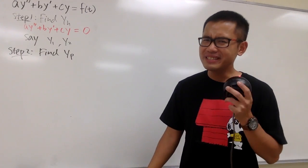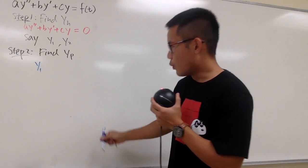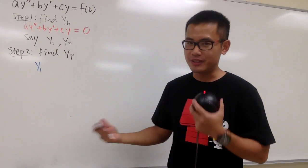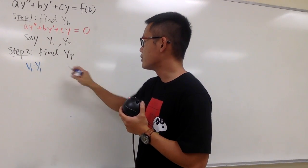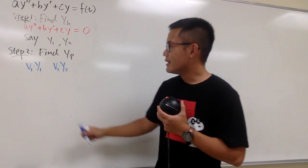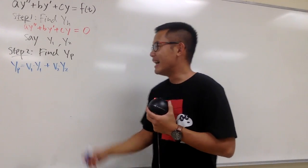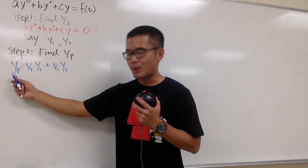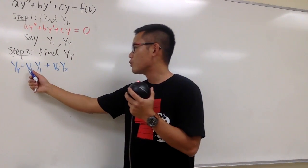We know two solutions already — y1 and y2. How can we find a new one? This sounds like the method of reduction of order. If you know y1, you multiply it by a function to produce a new solution. So for yp, we write yp = v1·y1 + v2·y2, where v1 and v2 are both functions of t. Our goal is to find what v1 and v2 are.